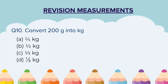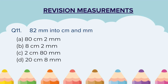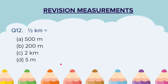Question 10: Convert 200 grams into kg. Here the answer is given in fractions, so you have to tell what fraction of a kg 200 grams represents. Question 11: Convert 82 millimeters into centimeters and millimeters — choose the correct option from 4. Question 12: Half a kilometer is equal to — A) 500 meters, B) 200 meters, C) 2 kilometers, D) 5 meters.